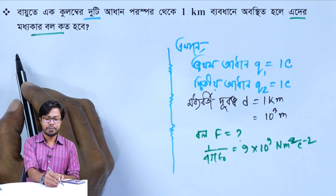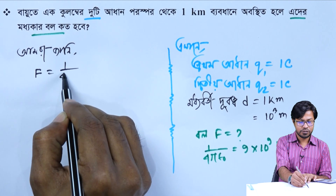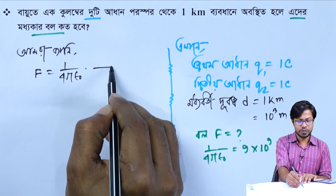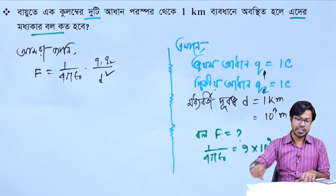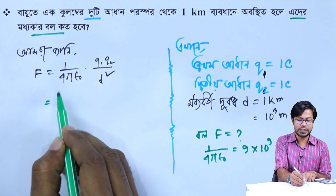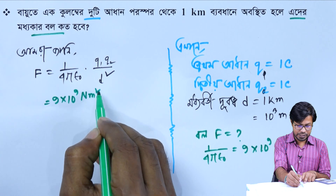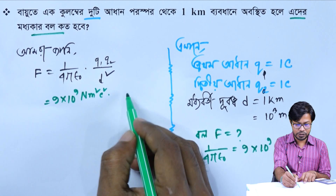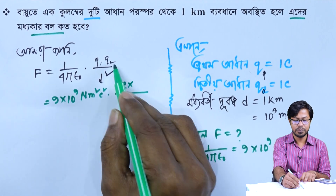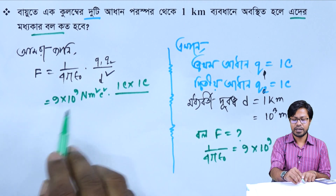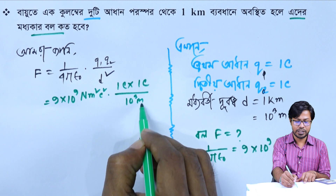We know that F equals to 1 by 4 pi epsilon naught into q1 q2 by d square. So, 1 by 4 pi epsilon naught is equal to 9 into 10 to the power 9 Newton meter square per coulomb square into 1 by 4 pi epsilon naught zero by 0.5.